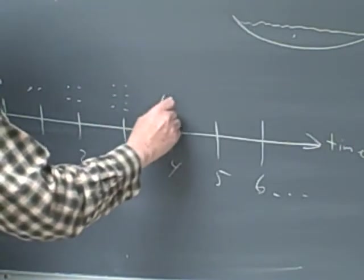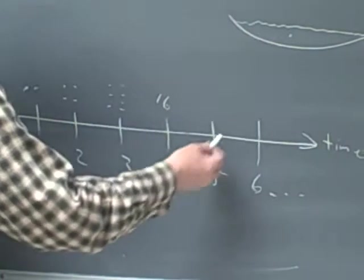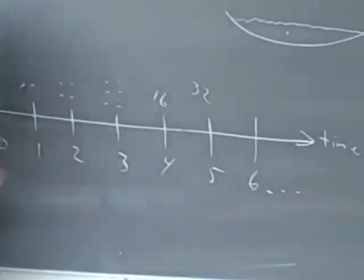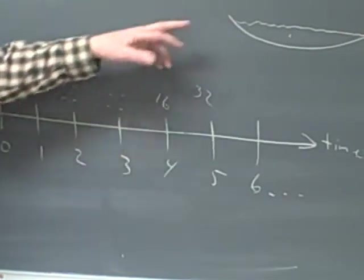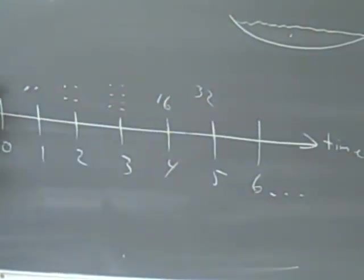And then four minutes, we've got 16. In five minutes we've got 32. So they're growing like that. We start with one, two, four, then eight, then 16, 32, etc. That's the way they're growing.